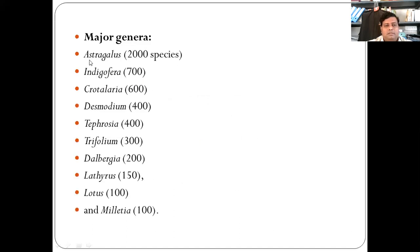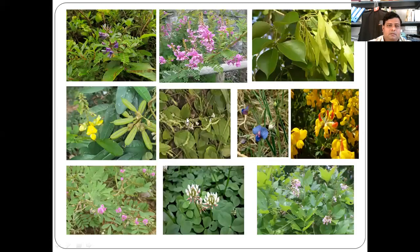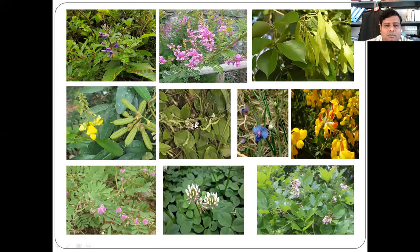These are the major genera we discussed: Astragalus, Indigofera, Crotalaria, Tephrosia, Trifolium, Dalbergia, Lathyrus, Lotus, Millettia. You can see Astragalus, Dalbergia sissoo which is a source of timber wood. This is Crotalaria retusa. This is Desmodium. This is Pongamia pinnata also known as Millettia. This is Tephrosia, commonly called as wild indigo. This is white clover. And here is Pongamia pinnata also known as Yadavadam tree.